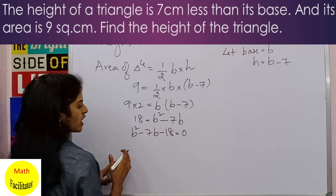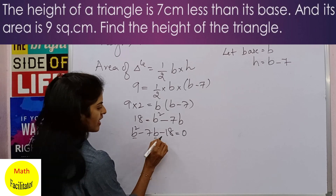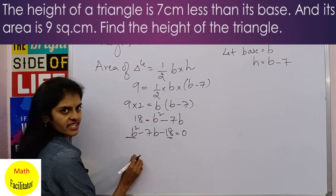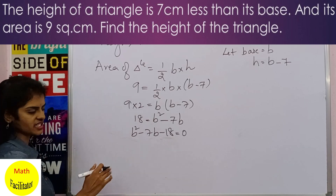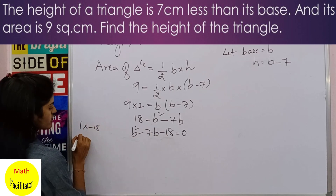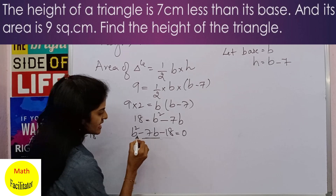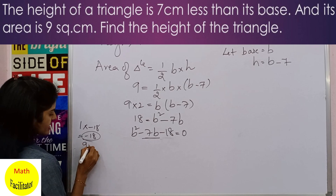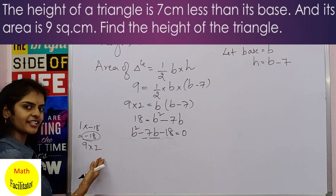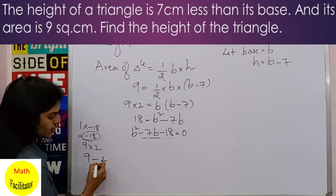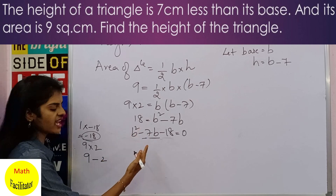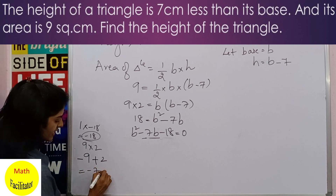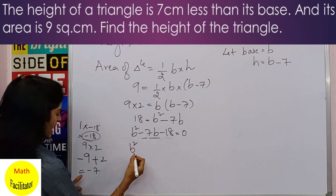Bringing all terms to one side: b² - 7b - 18 = 0. Multiply the b² coefficient and the constant: 1 × (-18) = -18. We need to split -7b into two terms whose product is -18 and sum is -7. Factors of 18 are 9 and 2; 9 - 2 = 7, so with the minus sign: -9 and +2, giving -9 + 2 = -7. So: b² - 9b + 2b - 18 = 0.